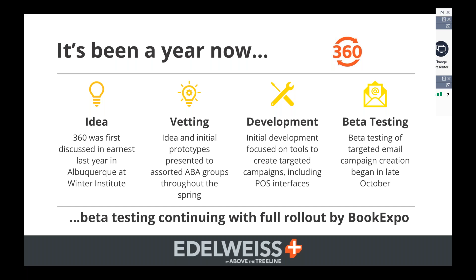After coming up with that idea and continuing to work through it, we had a series of months where we were just vetting the idea and seeing the interest. We presented to a number of ABA groups — the technology task force, the bookseller advisory council, the ABA board — and we kept getting really positive responses, which is a good indicator that we should keep on doing what we're doing. The response at Winter Institute was also really positive. It was around April, May that we started initial development. The way we like to build things is to put it out there, get ideas, and continue to evolve it.